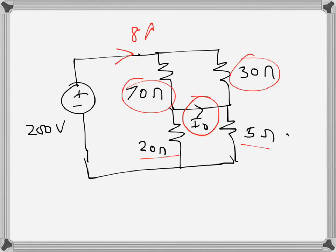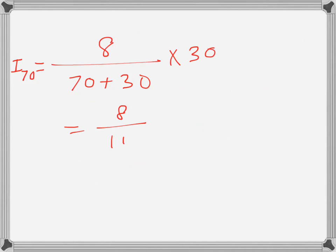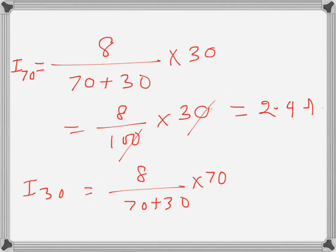This 8 amp current will be distributed between these two according to the current divider rule. So the current through 70 ohms will be 8 over 70 plus 30 times 30, which is 8 over 100 times 30, which is 2.4 amps. And I_30 will be 8 over 70 plus 30 times 70, which is 5.6 amps.